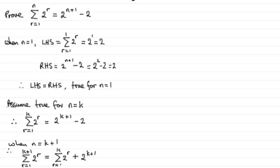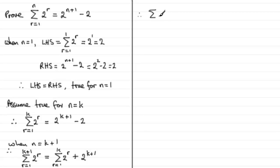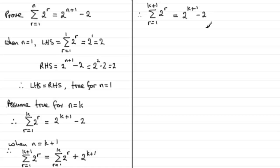So the sum of 2 to the power r, r going from 1 to k plus 1, equals the summation of the first k terms. But we know that is equal to 2 to the power k plus 1 minus 2. So we've got 2 to the power k plus 1 minus 2, and then we add the last term in the series, plus 2 to the power k plus 1.